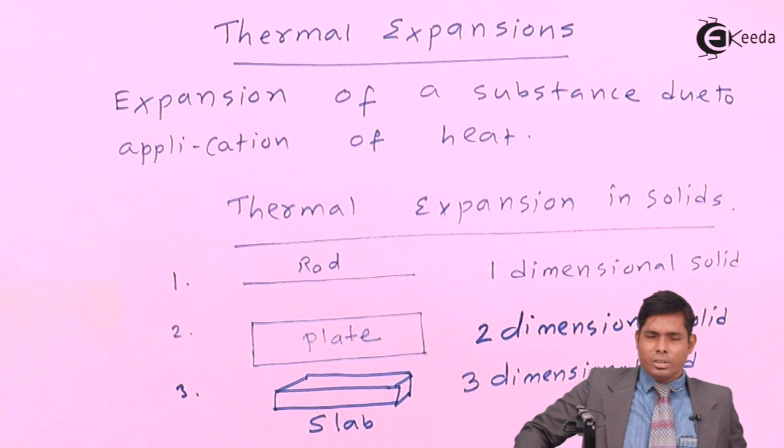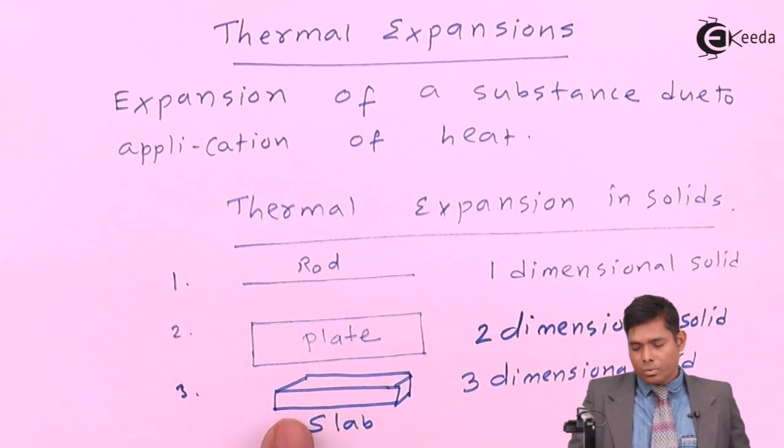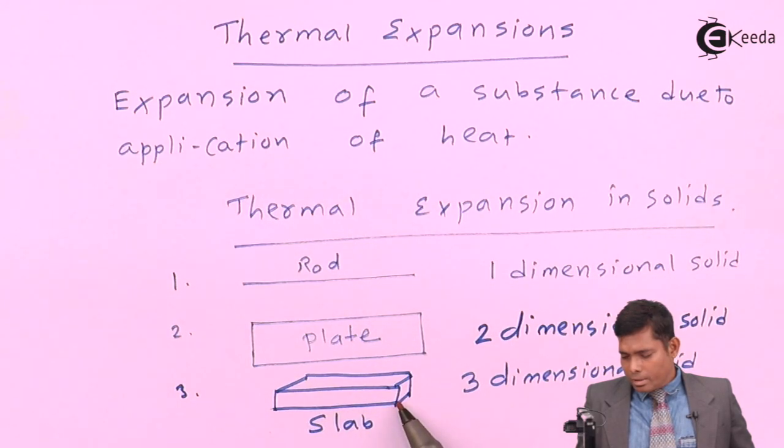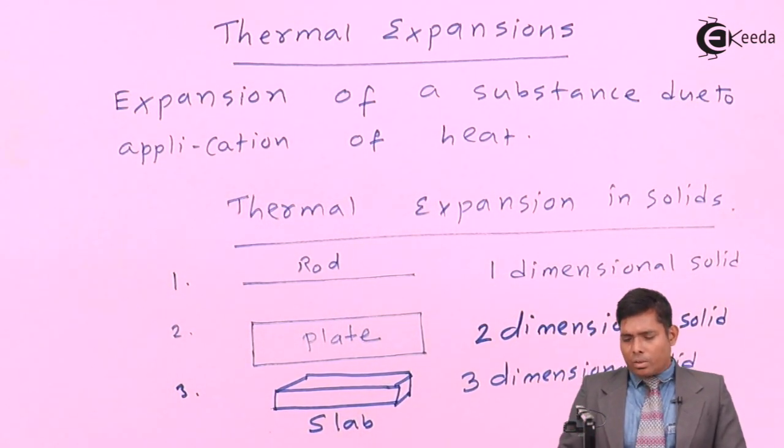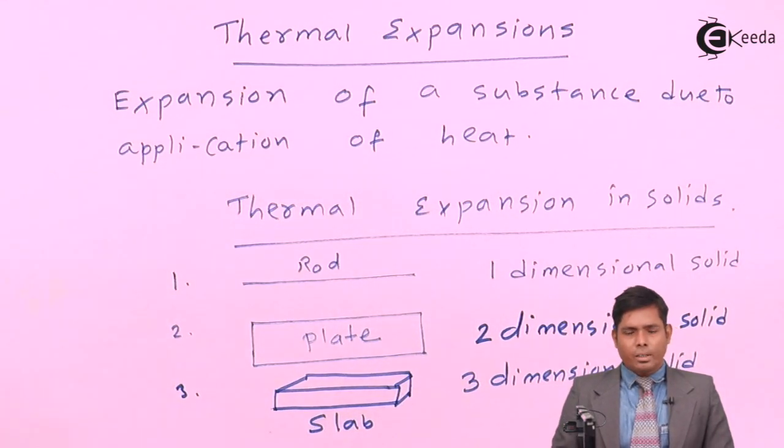So, that is counted, this is called 3D. This is one dimensional length. This is breadth, this is the height. That also counts. So, these are all three types of solids. Okay. Thank you.